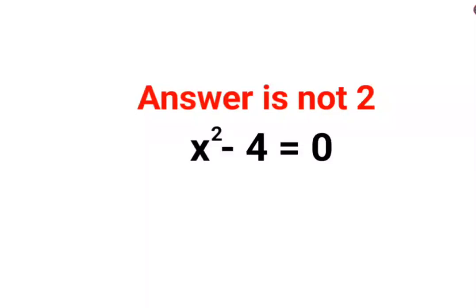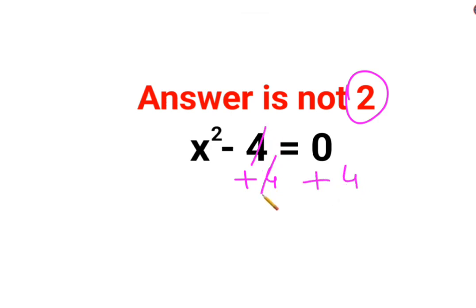Welcome everyone. A lot of people thought that the answer for this one is supposed to be 2. Please understand — in order to find the value of x, you need to shift the 4 to the other side. When you want to shift the 4 to the other side, we need to add 4 to both sides. What happens is this minus 4 and plus 4 get cancelled, so we're left with x squared equals positive 4.